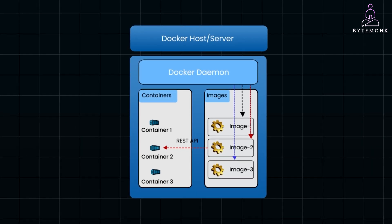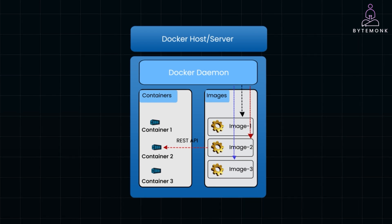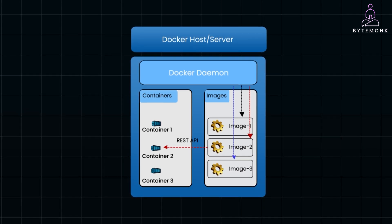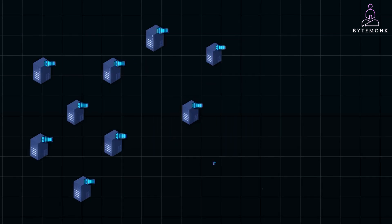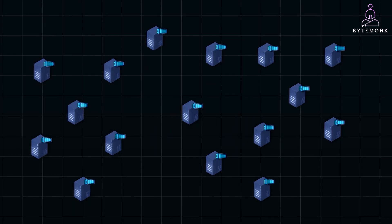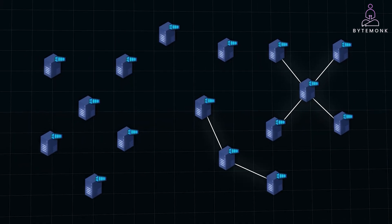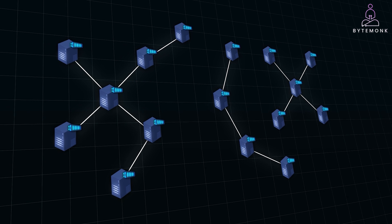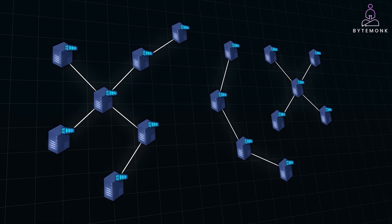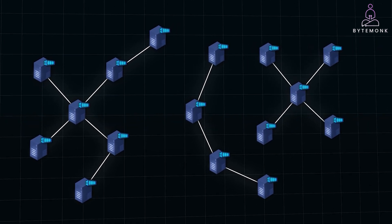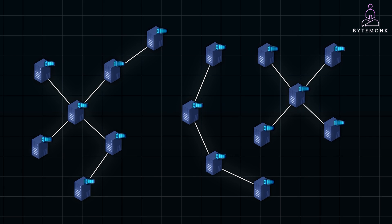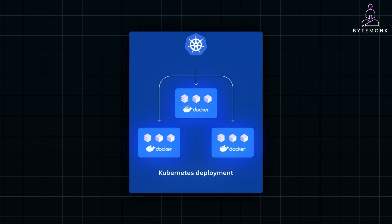Docker is a tool that helps us create, manage, and run these containers. It's popular because it makes developing, testing, and deploying applications much simpler and faster. Now, let's scale up. When you have multiple containers running across several machines, you need a way to manage them all. That's where a cluster comes in. A cluster is a group of interconnected computers or nodes that work together to run and manage these containers. But managing multiple containers in a cluster gets complicated quickly. This brings us to Kubernetes.